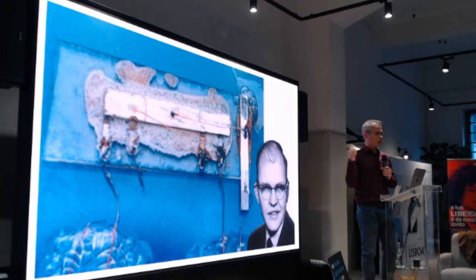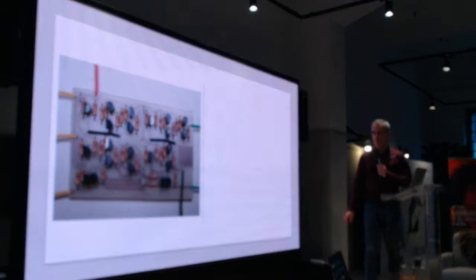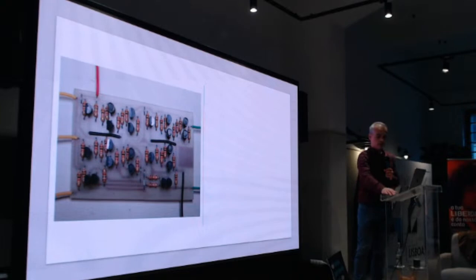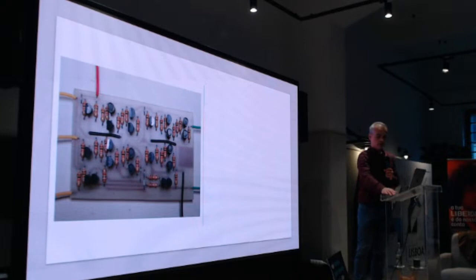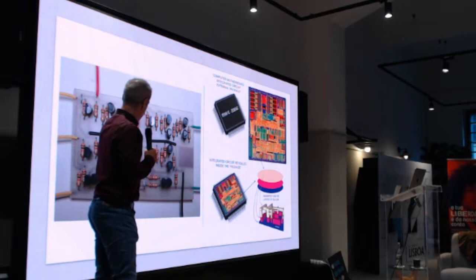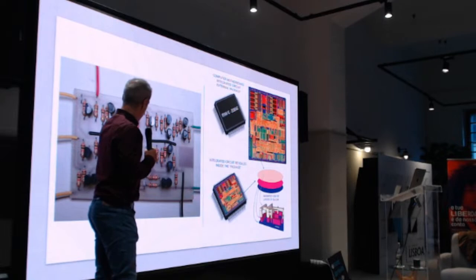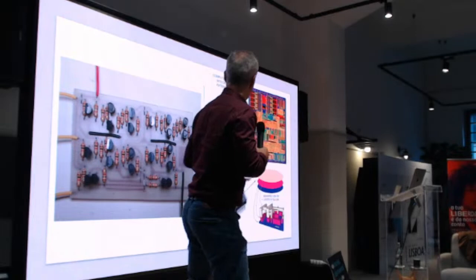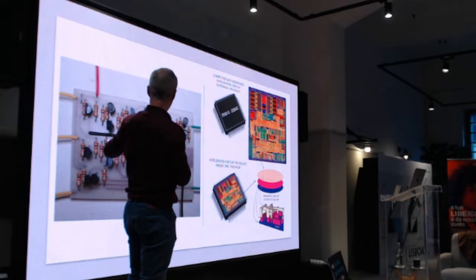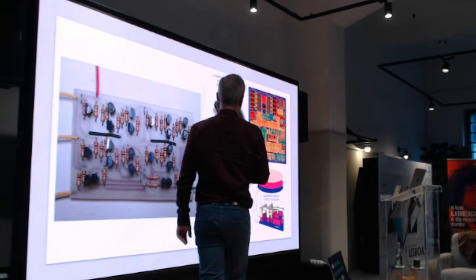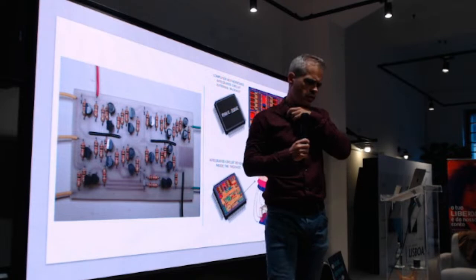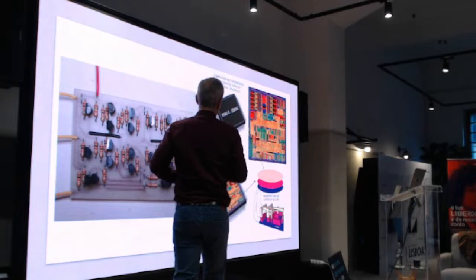Jack Kilby was only awarded the Nobel Prize in Physics in the early 2000s. He created the roots for moving from discrete circuits — resistors and transistors connected separately — to fully integrated circuits where everything is on the same silicon substrate. You can make a circuit with twelve or thirteen transistors on a very small piece of semiconductor, where, as I mentioned, you now have millions of them interconnected to make logic circuits.